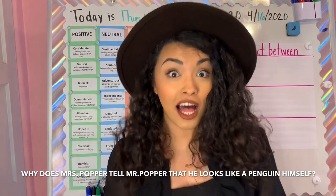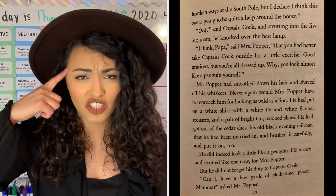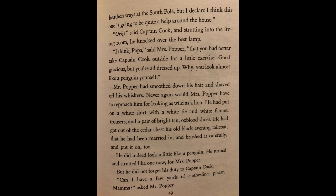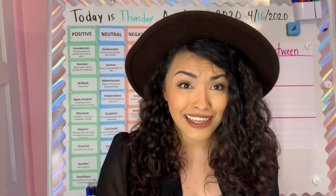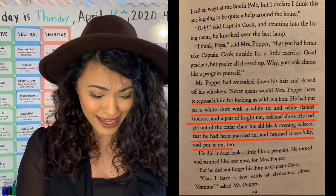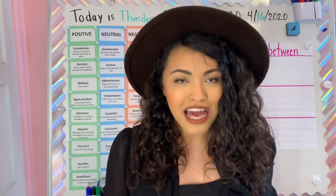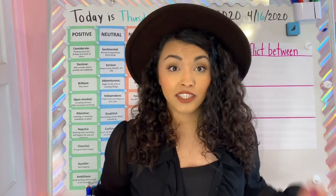Scholars, why does Mrs. Popper tell Mr. Popper that he looks like a penguin himself? I want you to look for your evidence first and double check that your evidence matches your answer. The book says on page 49: 'Never again would Mrs. Popper have to reproach him for looking as wild as a lion. He had put on a white shirt with a white tie and white flannel trousers and a pair of bright tan oxford shoes.' And I know that penguins are black and white as well, so that's why she thought that he looked like a penguin.